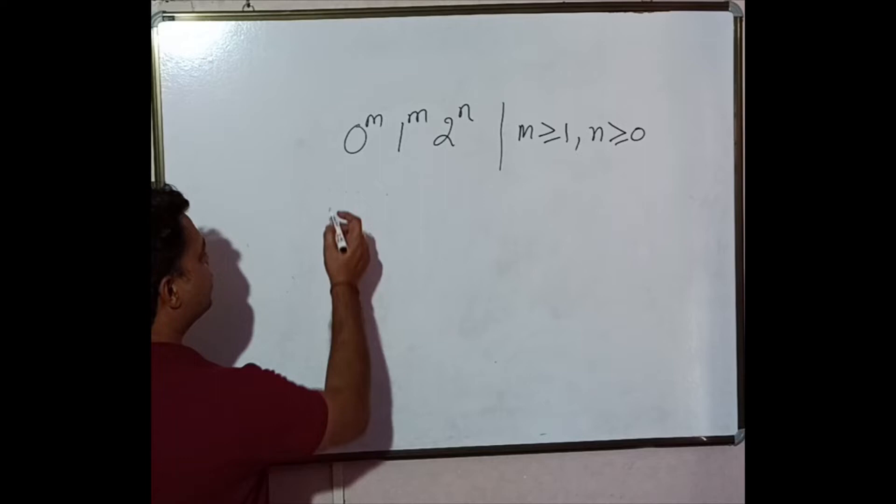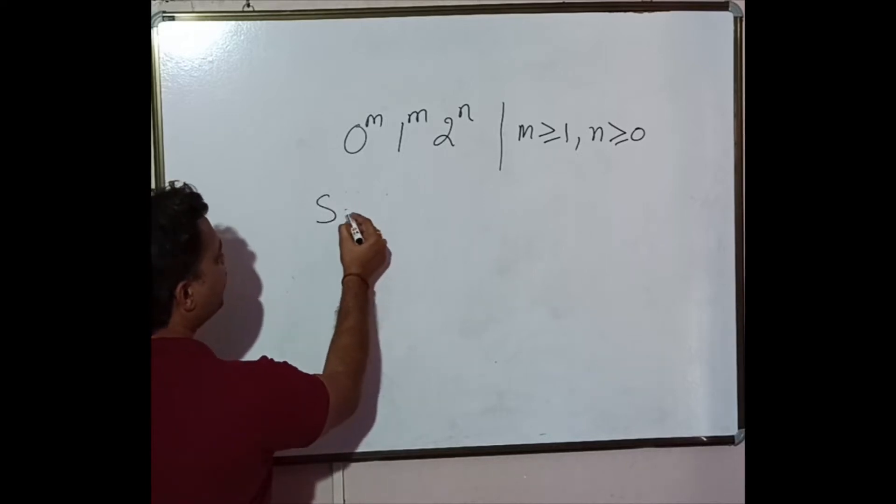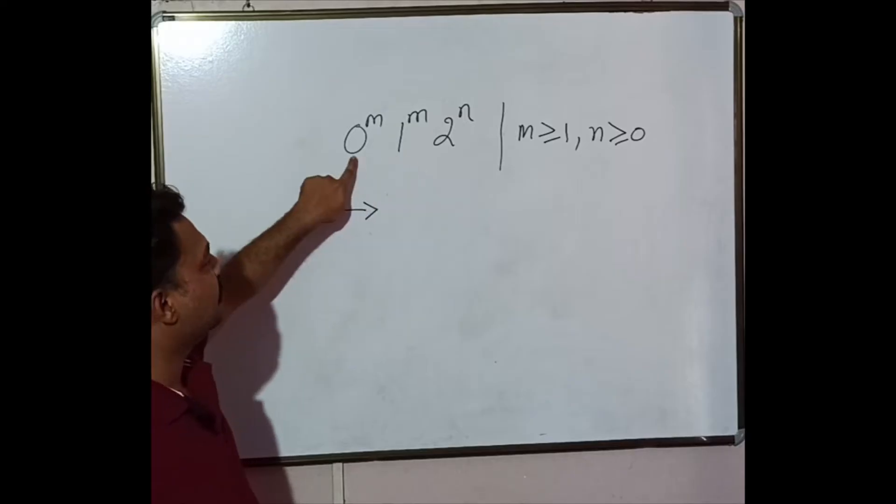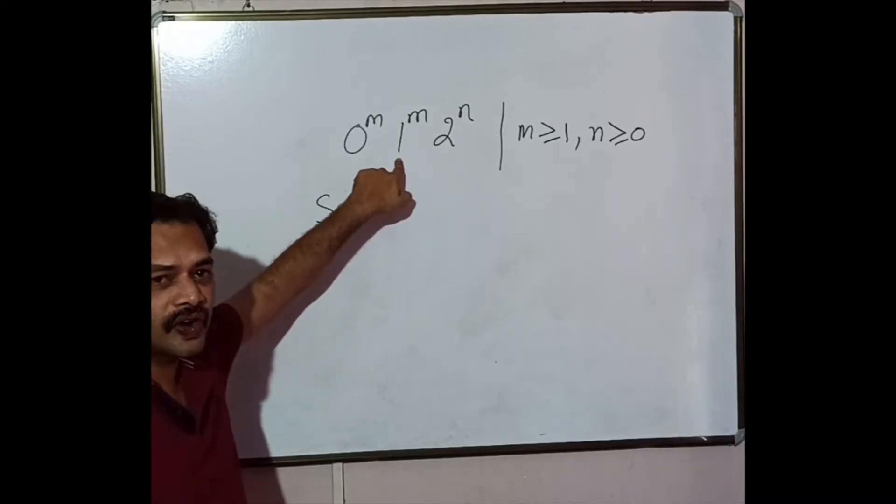And it comes like this. Let us start with the start state S. S derives. Now see there are two scenarios here. Number of 0s, occurrences of 0s should be equal to number of occurrences of 1.